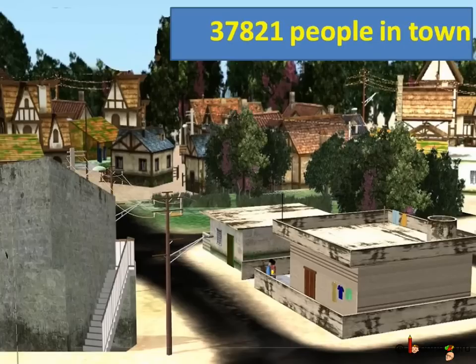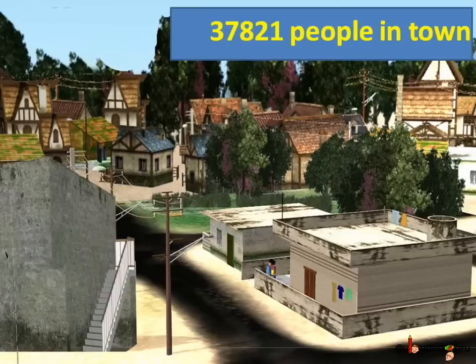Sometimes we know the exact value, still we use the nearest value. Like there are 37,821 people in a town. But 37,821 is hard to remember.